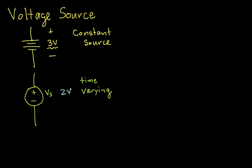In other words, V sub S might be some signal that changes as a function of time. So for example, V sub S could be something like 10 cosine 377T. Just as an example. In other words, the big difference here between this symbol and this symbol is the fact that the second symbol, the circle, could represent a time varying voltage.